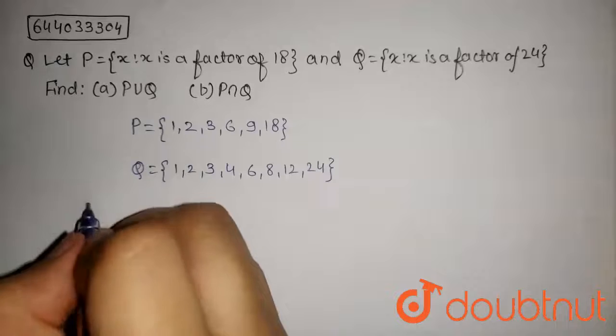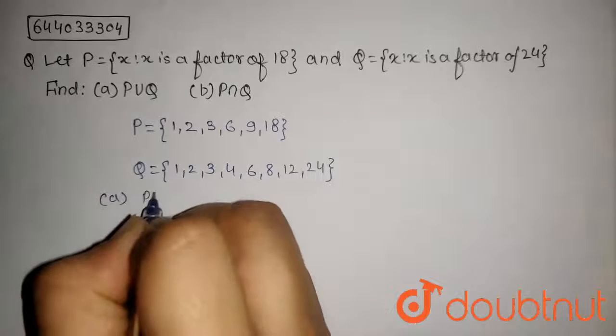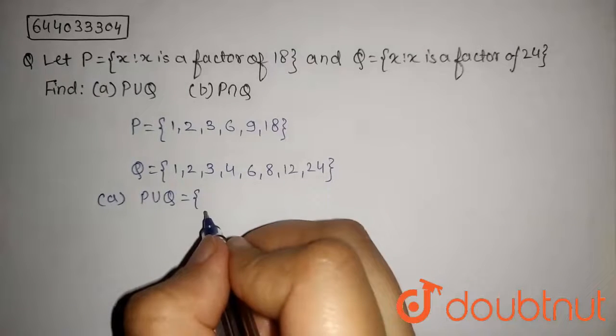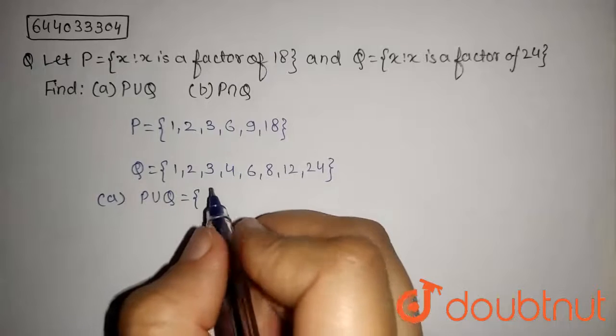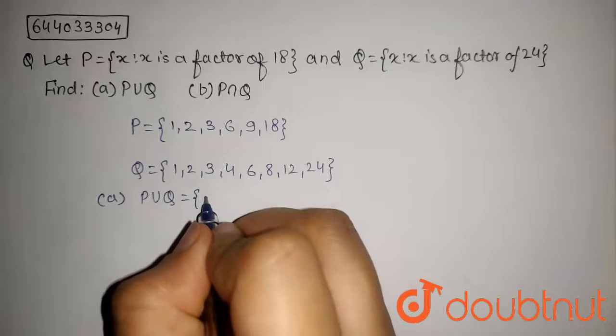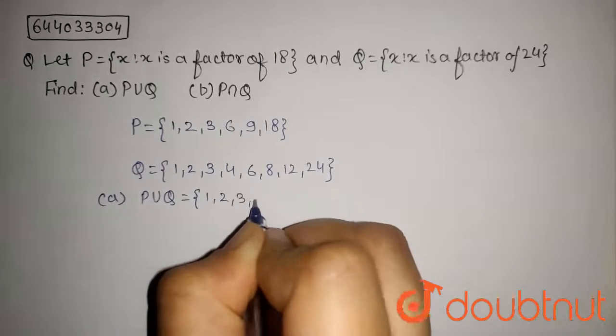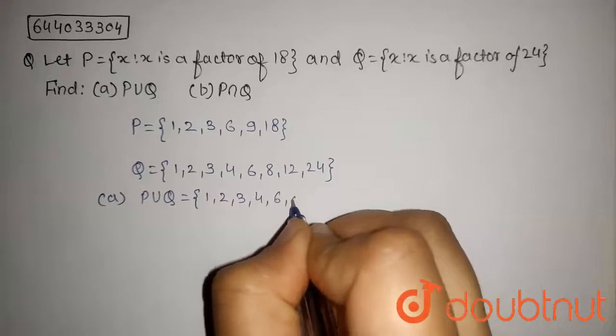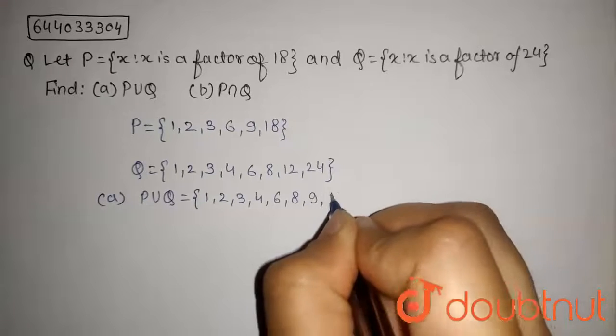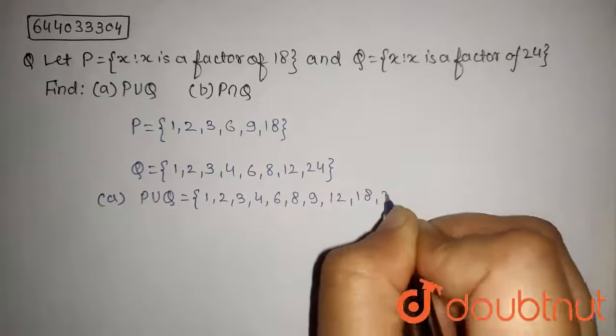Now we have to find A, P union Q. So P union Q will contain all elements which are in P or Q. So this set will contain 1, 2, 3, 4, 6, 8, 9, 12, 18, 24.